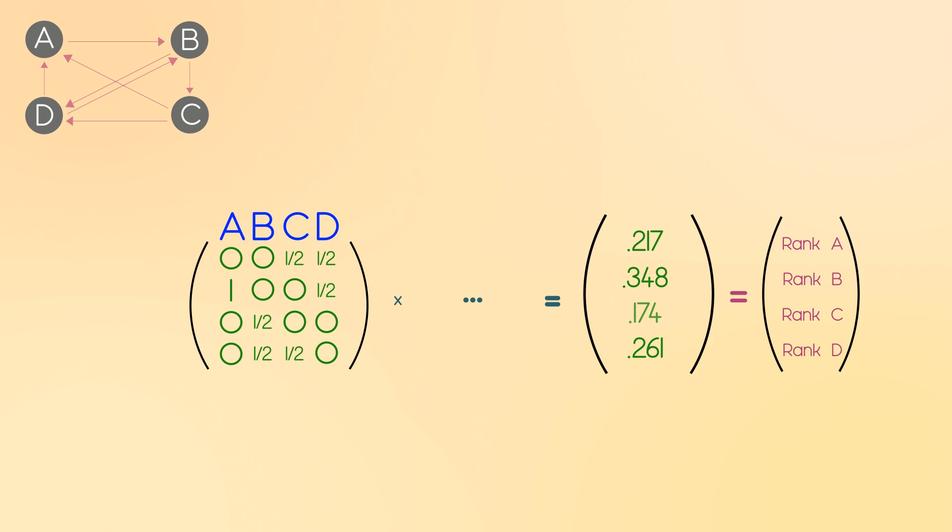We see that site B is ranked highest as expected, and C is the lowest. But also note that site D ranked higher than A, even though they both had two incoming links.